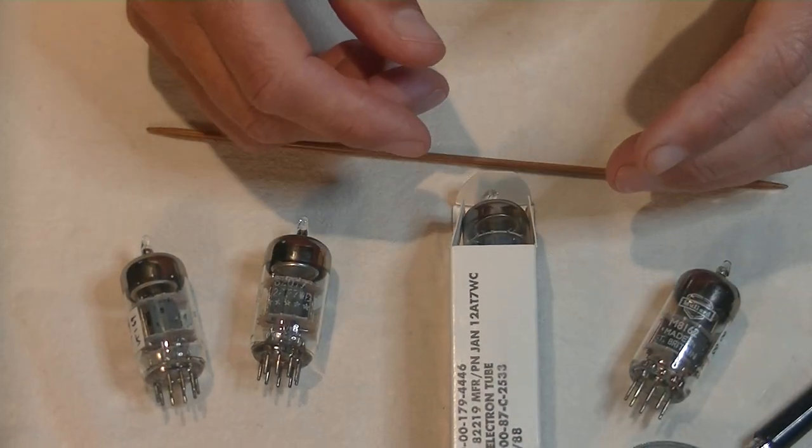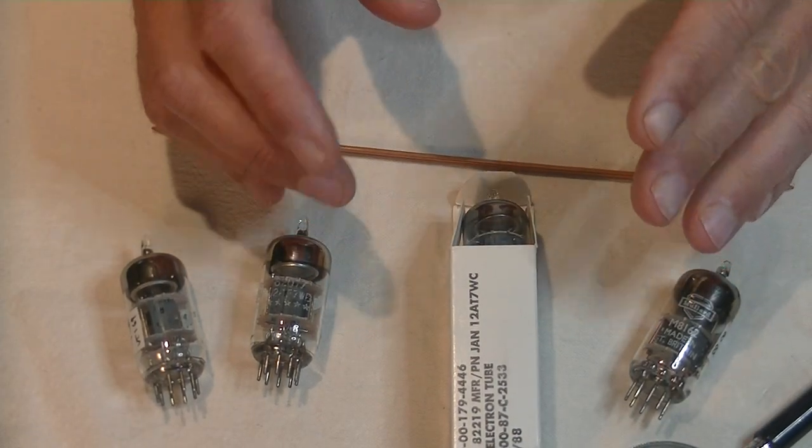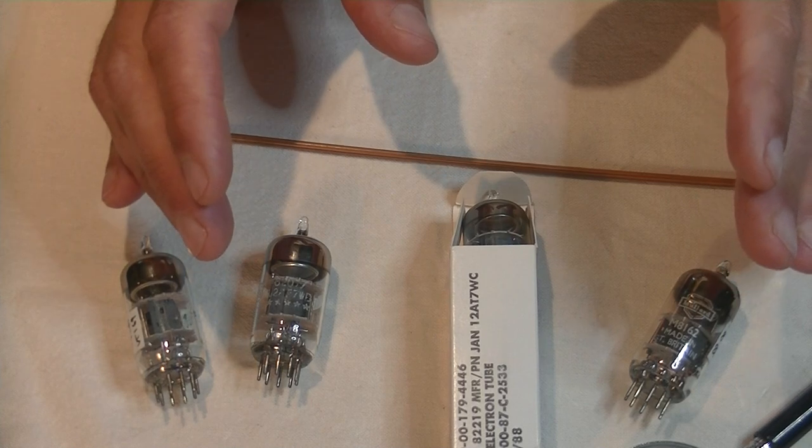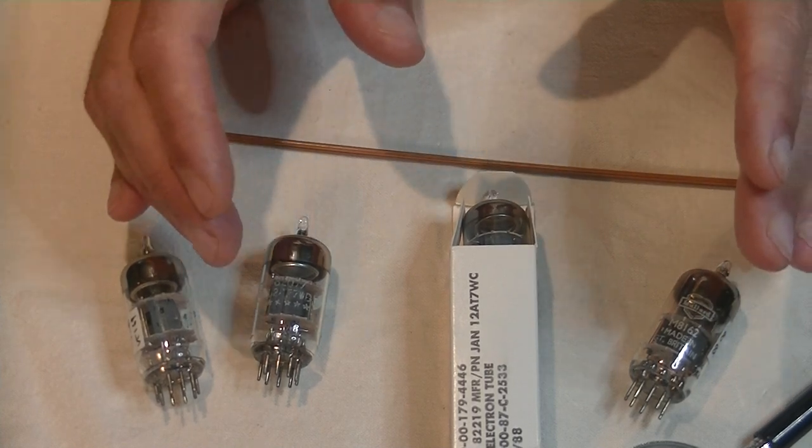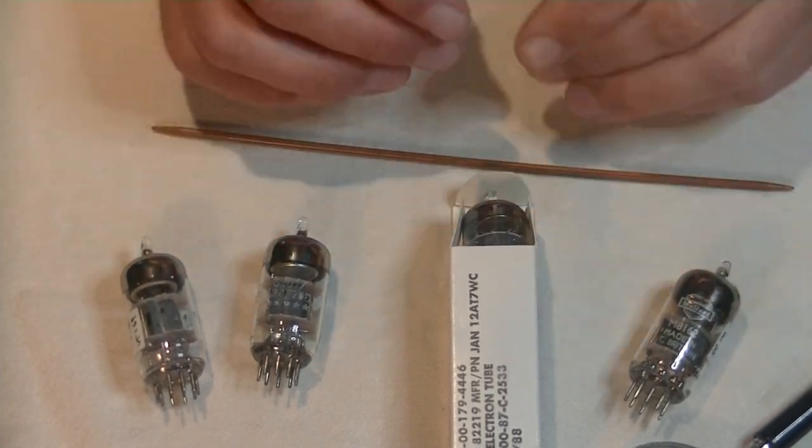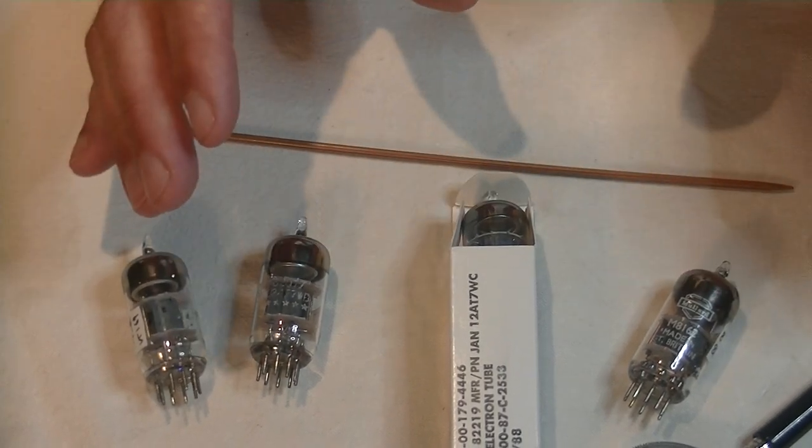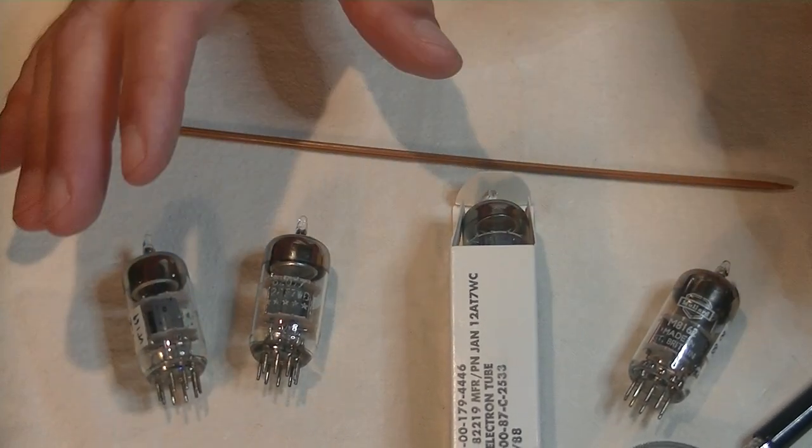Hey everyone, it's Jim from Valves and More, an online vintage tube store, and today we're going to tube roll the 12AX7 close cousin, the 12AT7.